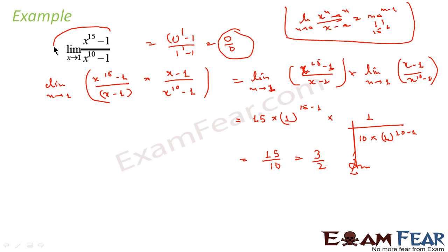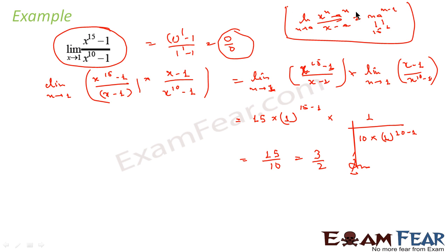So the value of this expression is nothing but 3/2, and that's what we have done. First we put x equal to 1 and saw that the equation is of the form 0/0. That means there is a factor making it 0, which was (x minus 1). So we explicitly wrote (x minus 1) — we divided and multiplied the whole thing by (x minus 1) — then applied the formula: limit of (x^n minus a^n)/(x minus a) as x tends to a equals n·a^(n-1).